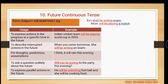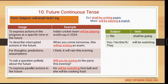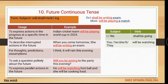The future continuous tense is used to express actions in progress at a specific time in the future: 'Indian cricket team will be playing the World Cup in 2024'. To describe interrupted actions in the future: 'when you come tomorrow, she will be writing an exam'. Chart: I and we take 'shall be' — 'I shall be going'; you, he, it, they take 'will be' — 'he will be watching'. Keywords: tomorrow at this time, next day at this moment, next week the same time.